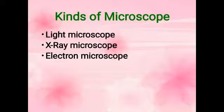Now, kinds of microscope. There are various types of microscopes designed by scientists. There are three major types of microscopes according to the source of light: light microscope, second one, x-ray microscope, and the third one, electron microscope.